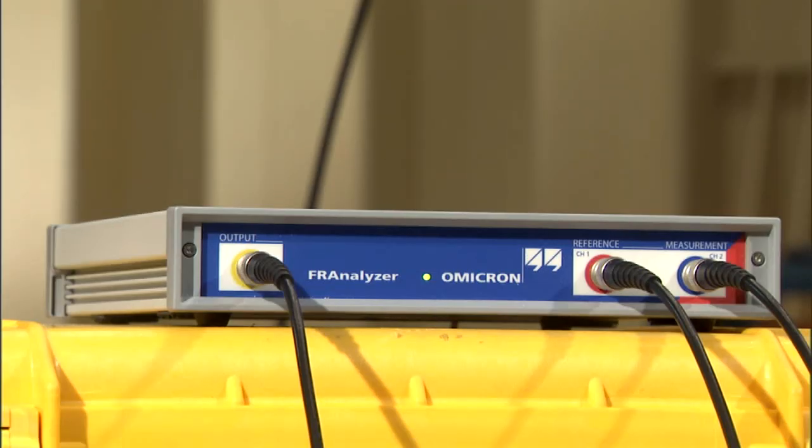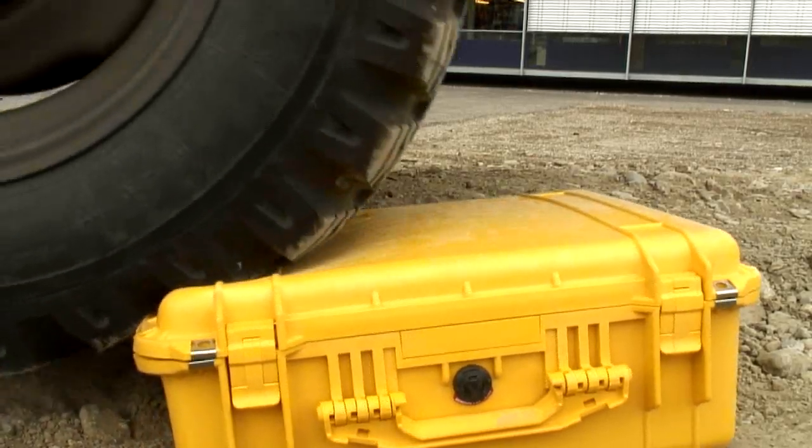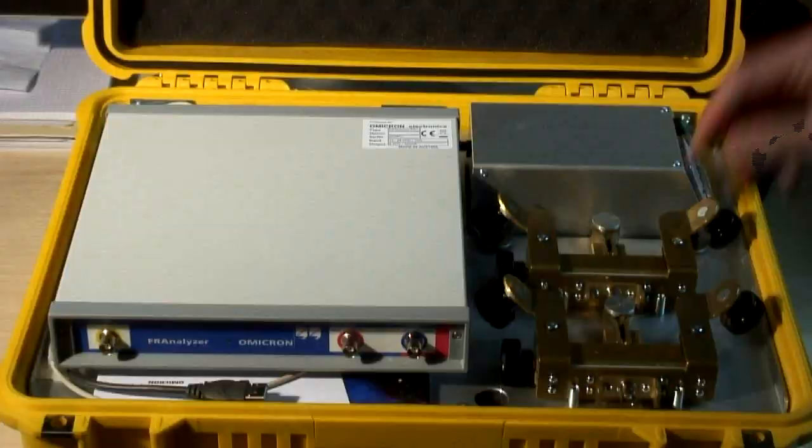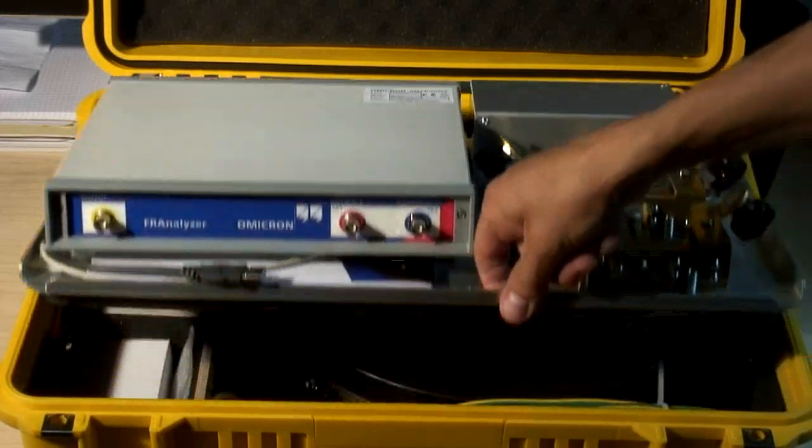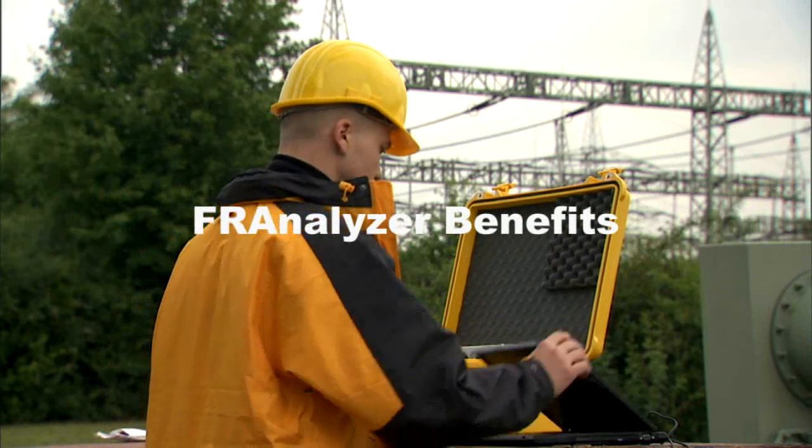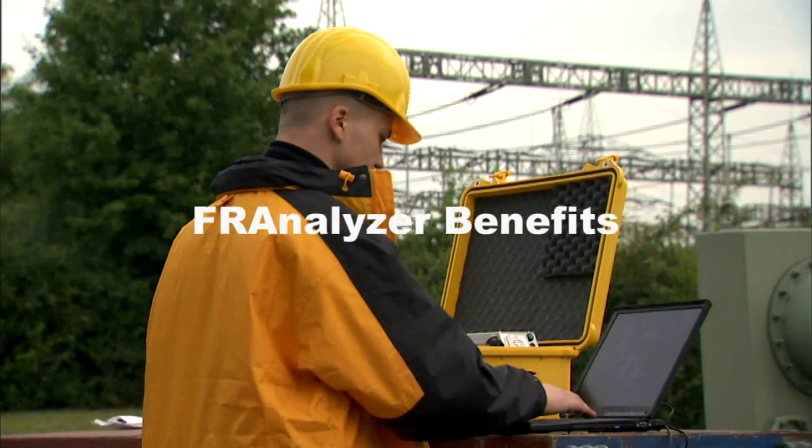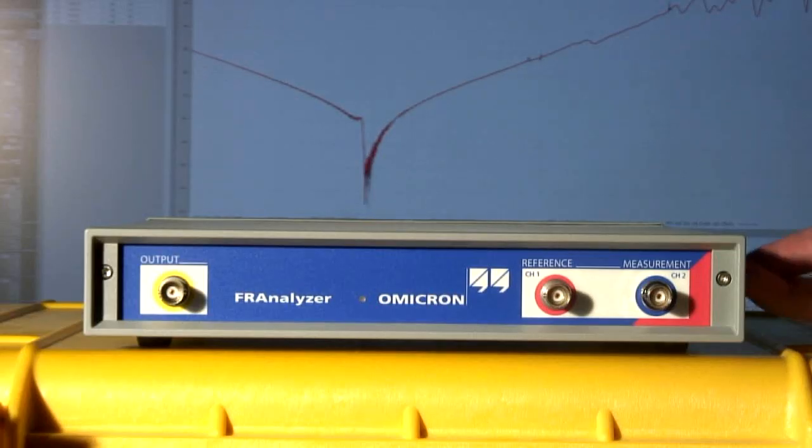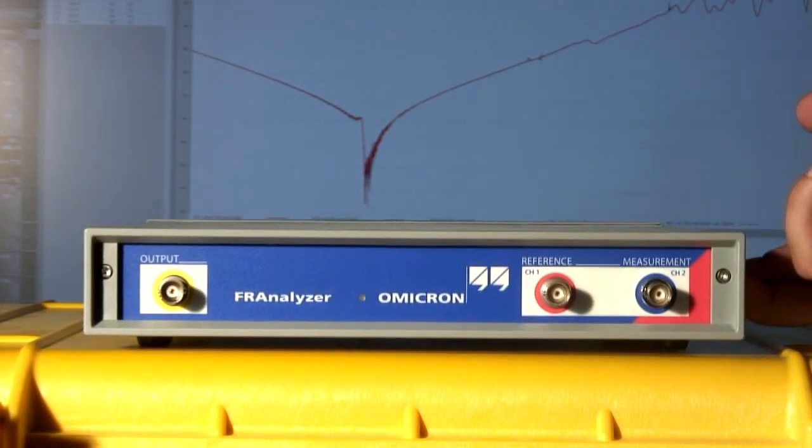Omicron's FRA device is called Franalyzer. It comes in a rugged case for on-site use. The unit and all necessary accessories fit into a single case, including sufficient battery power to complete the most comprehensive testing of any transformer. Franalyzer is small and lightweight.